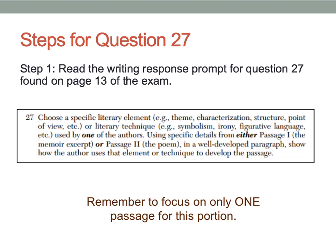point of view, etc. — or literary technique — symbolism, irony, figurative language, etc. — used by one of the authors. Using specific details from either passage 1, the memoir excerpt, or passage 2, the poem, and a well-developed paragraph, show how the author uses that element or technique to develop the passage. Remember to focus on only one passage for this portion.